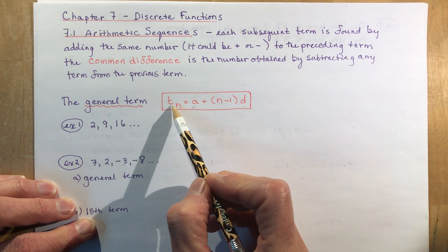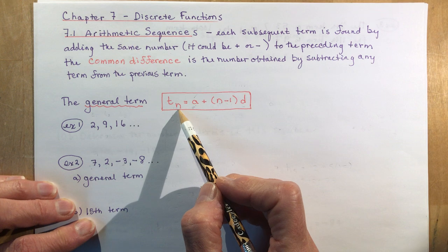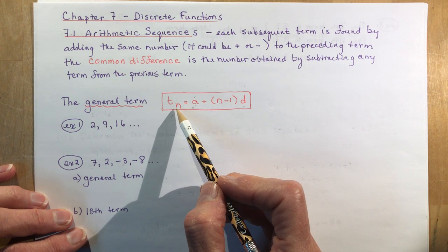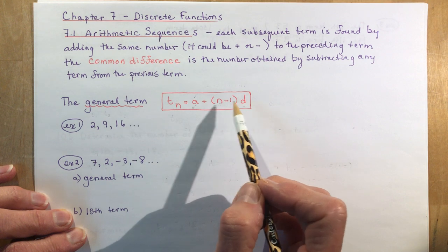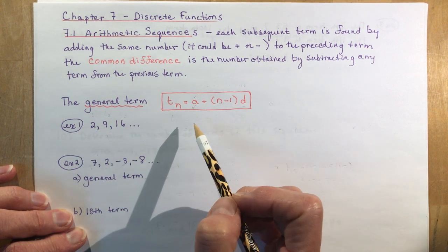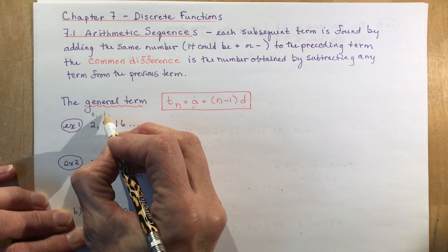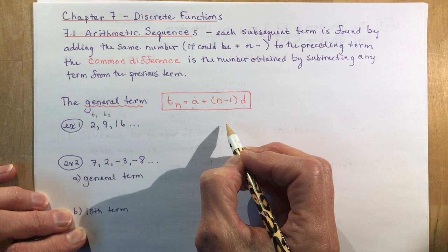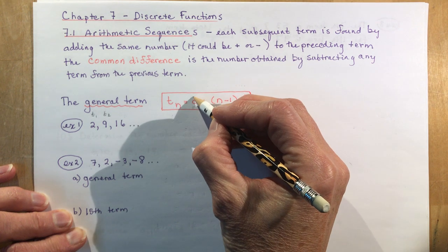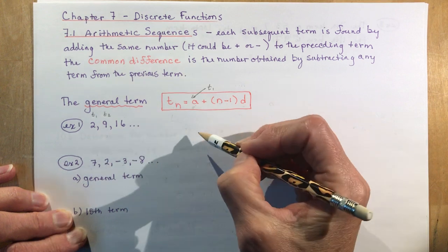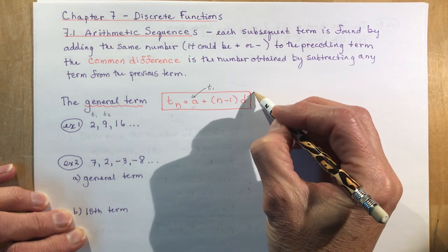You're usually asked to find what is called the general term. The general term describes any term in the sequence. When I say tn — the nth term — it means you can find the thousandth term, the fiftieth term, or the two millionth term using one equation. The formula is: tn = a + (n − 1) × d, where a is your first term (t1) and d is your common difference.